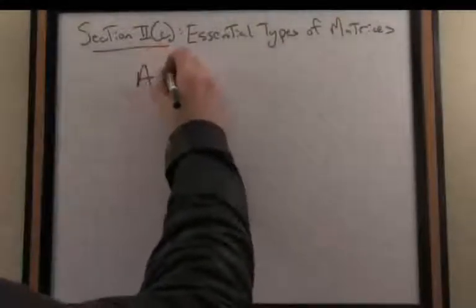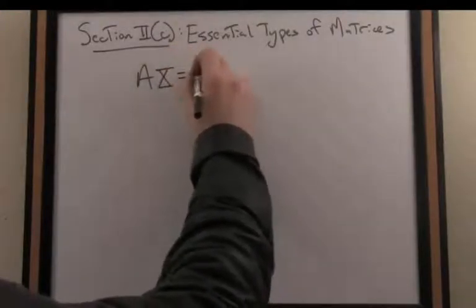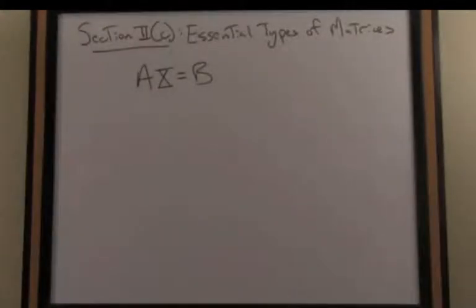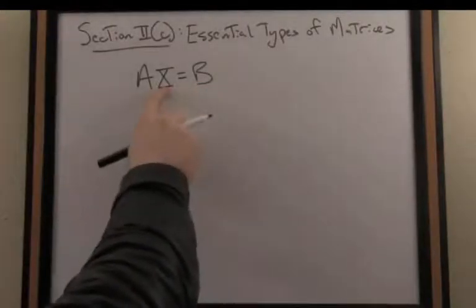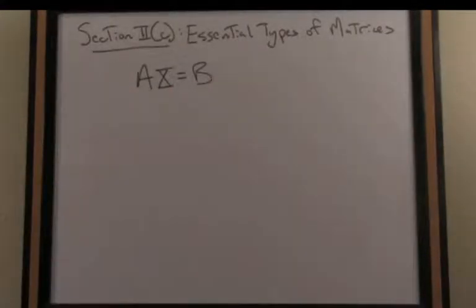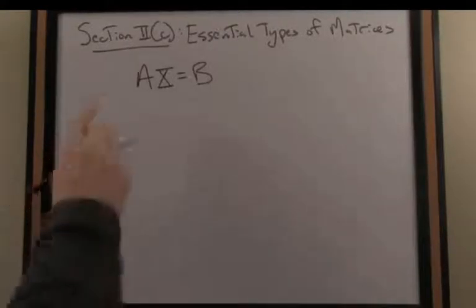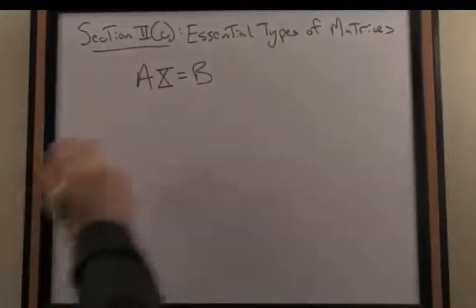If I have, for instance, a matrix equation, it works in many ways analogously to an algebraic equation with real value variables. Let's say I know this matrix A and I know this matrix B, but I want to solve for this matrix x, which is my unknown matrix. Well, if A is invertible, then I could multiply both sides of this equation by A inverse.